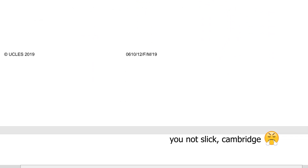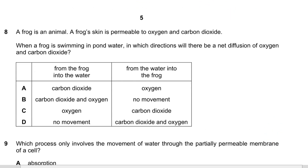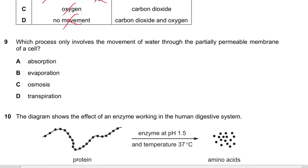Question 8: A frog's skin is permeable to oxygen and carbon dioxide. When swimming in pond water, which directions will there be net diffusion? From the frog into the water means getting rid of it — that's carbon dioxide, not oxygen. Into the frog means it needs it — that's oxygen. Answer is A.